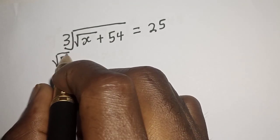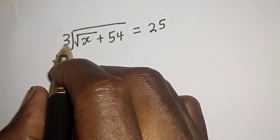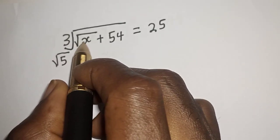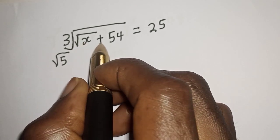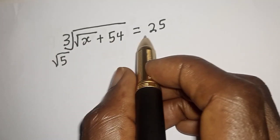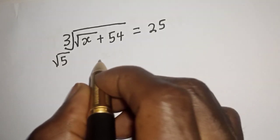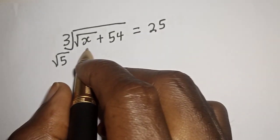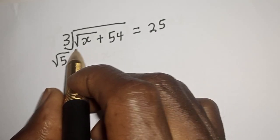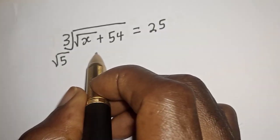Square root of 5 raised to the power of cube root of square root of s plus 54 is equal to 25. Hi everyone, welcome to my class. In this class I want to find the value of s from this equation.